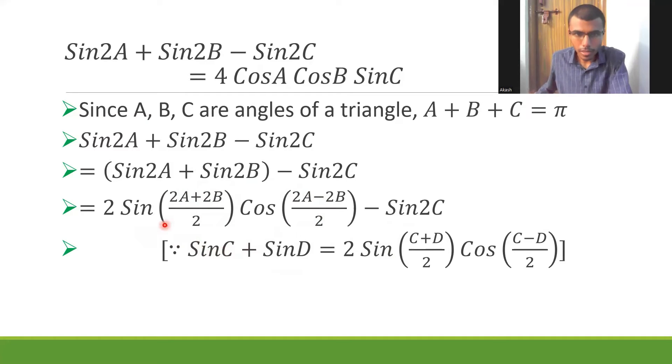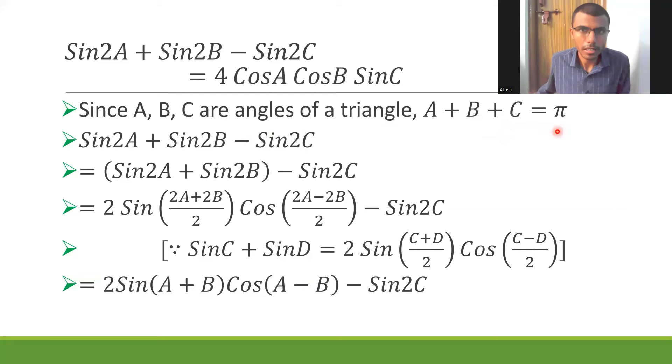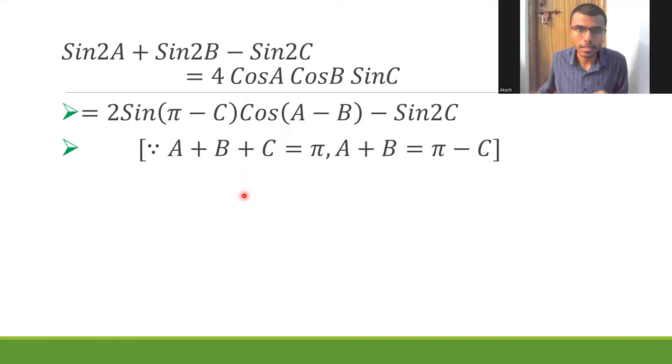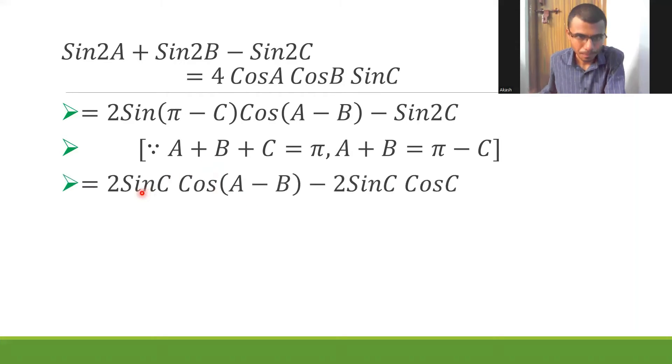Now here we know that A plus B plus C is equal to π, so basically A plus B would be equal to π minus C. If you send C to the other side, you get A plus B is π minus C. That's what I'm going to use. So here 2 sin (A plus B) is going to be 2 sin (π minus C) into cos (A minus B) minus sin 2C. Now, why did this happen? Mention the reason like this - it's important so that the examiner would not have any chance to deduct marks.